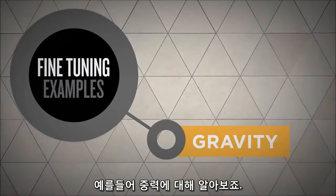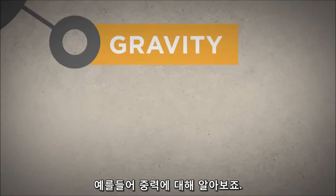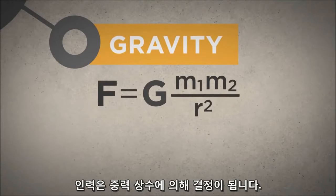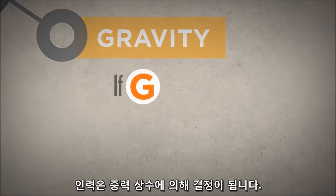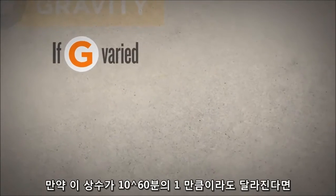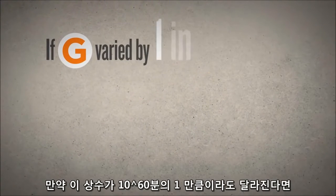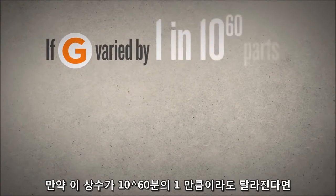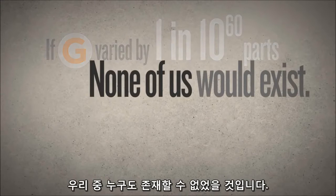Consider gravity, for example. The force of gravity is determined by the gravitational constant. If this constant varied by just 1 in 10 to the 60th parts, none of us would exist.